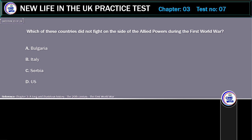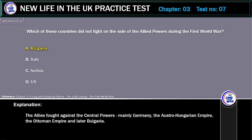Which of these countries did not fight on the side of the Allied powers during the First World War? A. Bulgaria. B. Italy. C. Serbia. D. US. Correct answer: Bulgaria. Explanation: The Allies fought against the Central Powers, mainly Germany, the Austro-Hungarian Empire, the Ottoman Empire, and later Bulgaria.